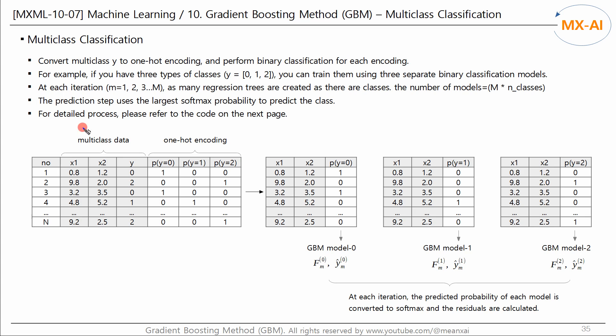Let's look at the data with multiple classes as shown below. There are two features X and a target class Y, which consists of 0, 1, and 2. If there are more than two classes, convert the target Y to one hot encoding.